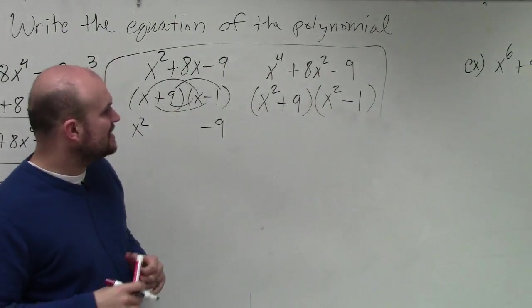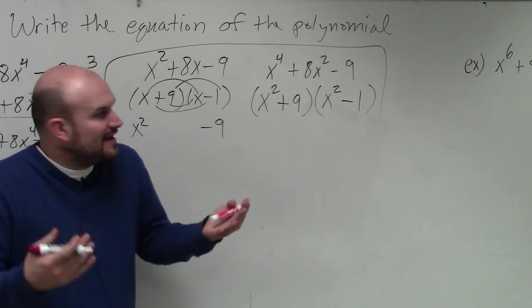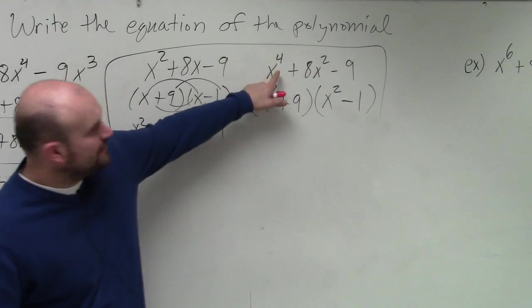So I can use x squared plus 9, or x squared plus 9, and x squared minus 1. Now, let's verify. Does this work? Does x squared times x squared give you x to the fourth?